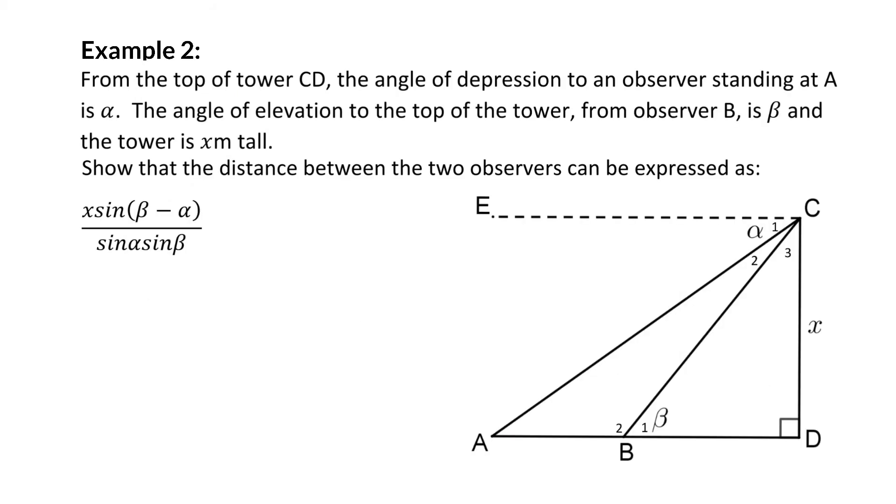Example 2. From the top of a tower CD, the angle of depression to an observer standing at A is alpha. I'm reminding you that an angle of depression is measured from the horizontal downwards, and in this case downwards to the observer at point A, and therefore C1 is alpha. The angle of elevation to the top of the tower from observer B is beta, and again measured from the horizontal, this time upwards to the top of the tower, we measure angle beta. And the height of the tower is x meters.